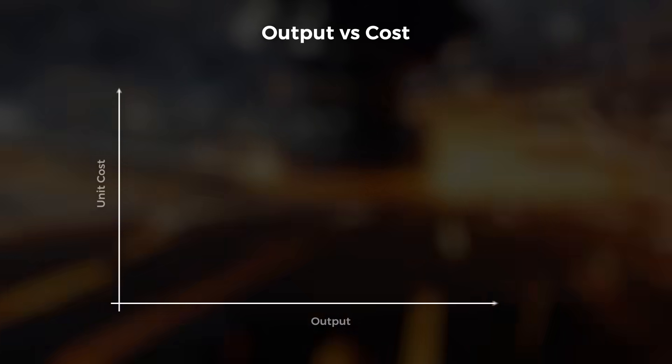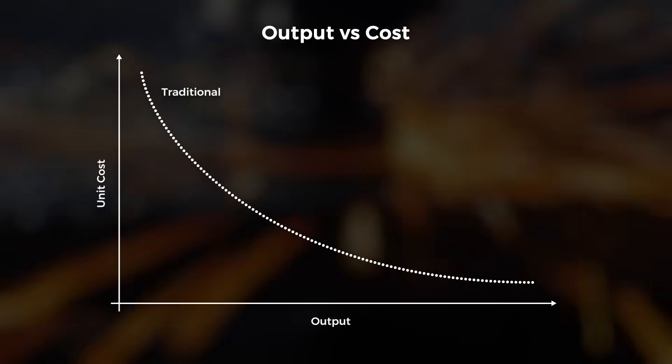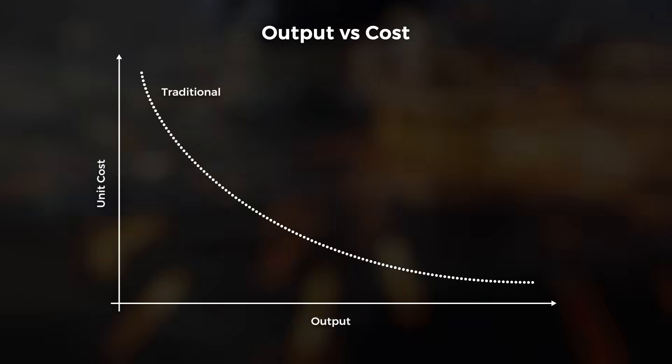This results in a graph that looks something like this, where our cost per part rapidly decreases as we build more, soon becoming dominated by the material costs.